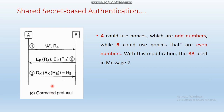Now let us see the corrected protocol. In the previous slide, we saw an attack on shared secret key based authentication. In the corrected protocol, party A again sends identity A and random value RA to party B. The key change is that party B now encrypts both RA and RB — the RB value, which was previously sent directly, is now also encrypted.